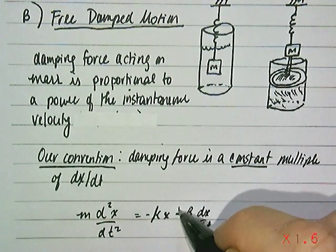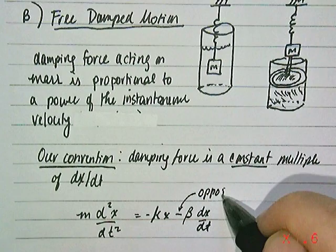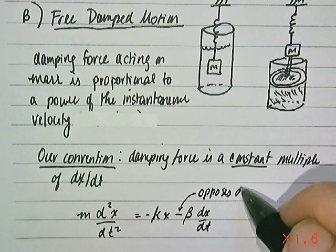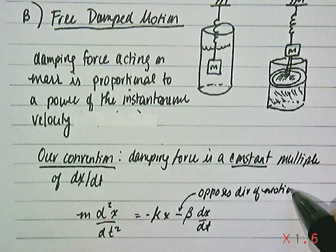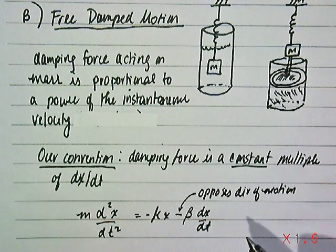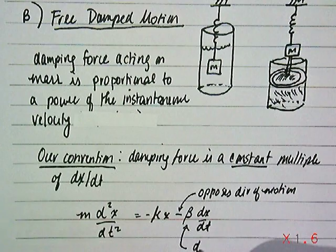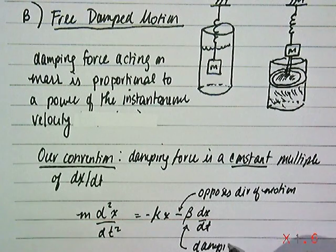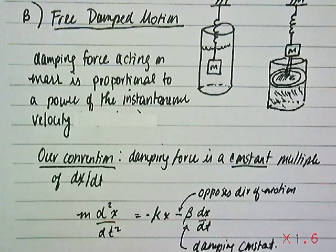The reason for the minus sign is that that force opposes the direction of motion, hence damping slows it down, slows the oscillation down. And here's a new constant, this will be our damping constant.